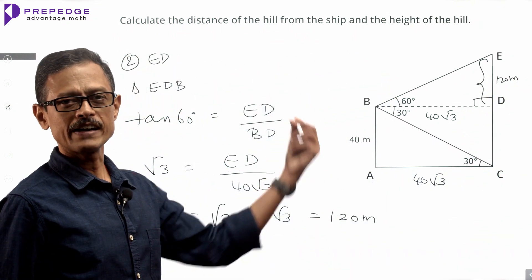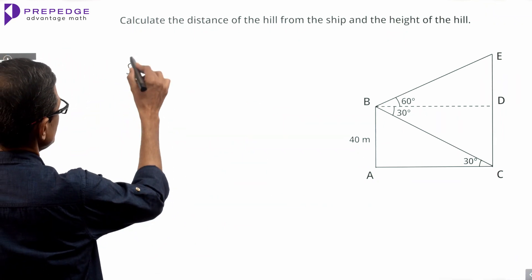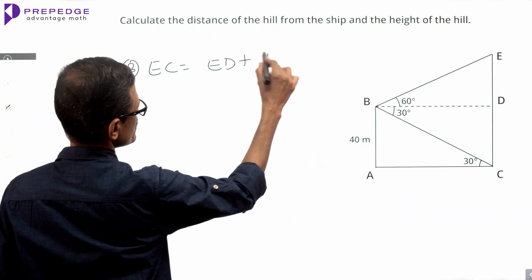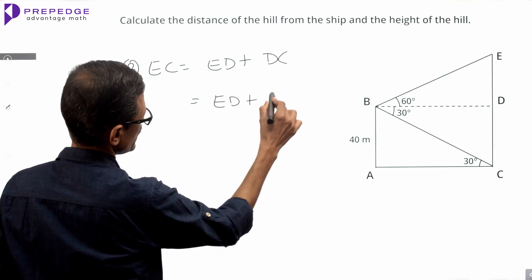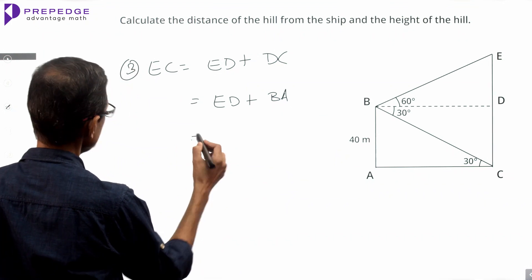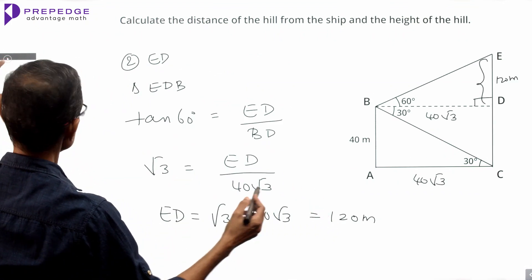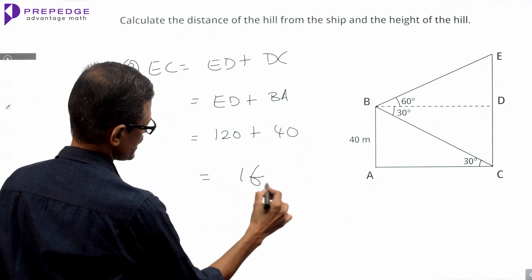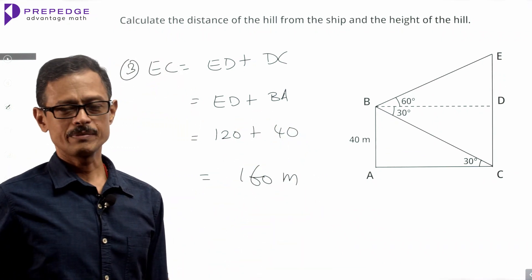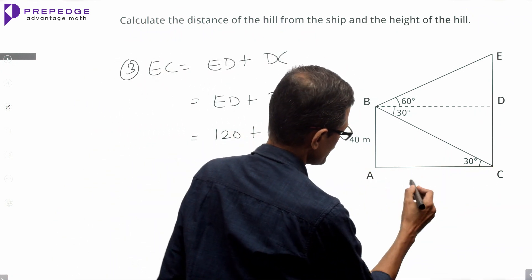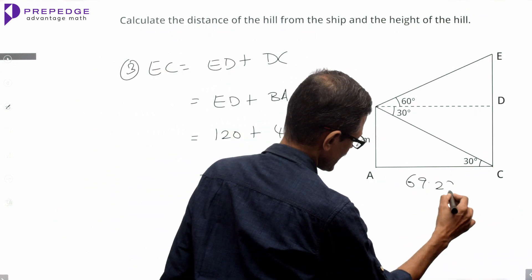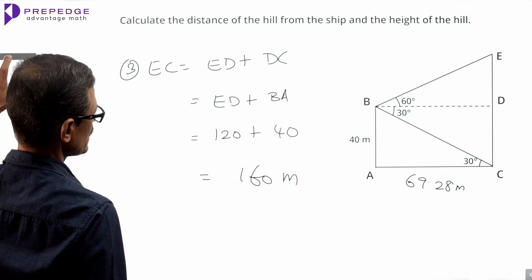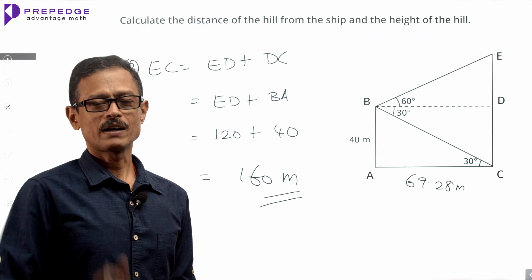Step 3: Find the height of the hill. EC equals ED plus DC, which equals ED plus BA. ED equals 120 meters and BA equals 40 meters, so the height of the hill equals 160 meters. The distance between the hill and the ship is 69.28 meters and the height of the hill is 160 meters. Both parts are done.